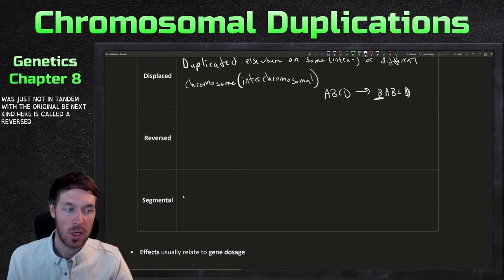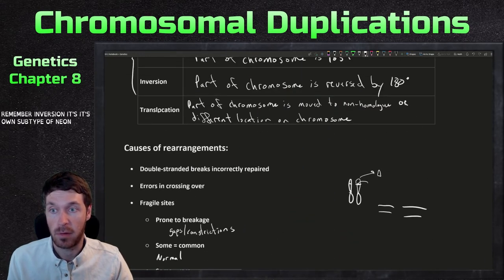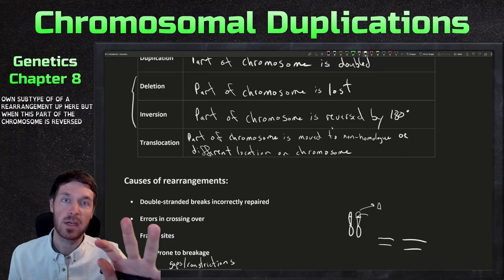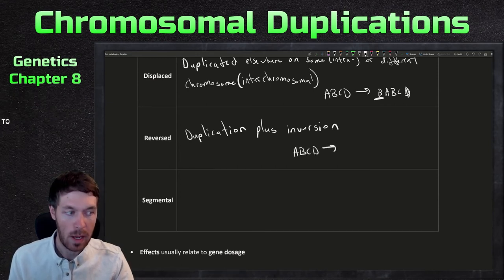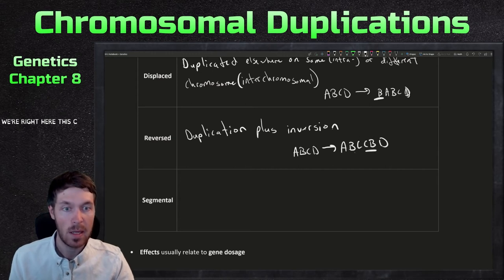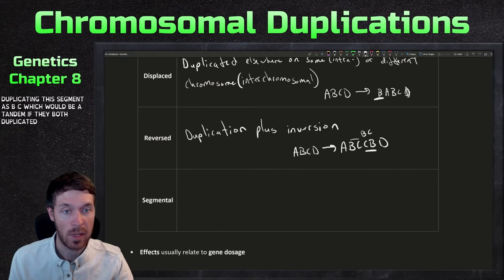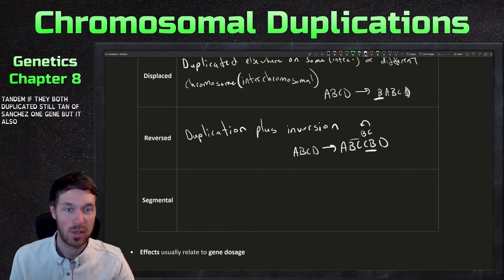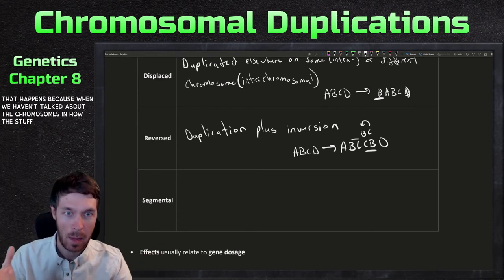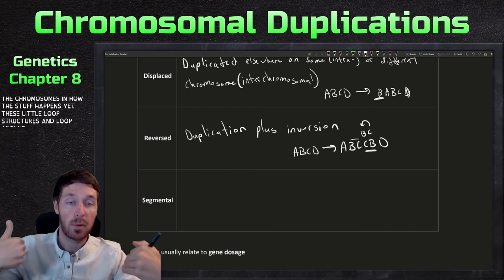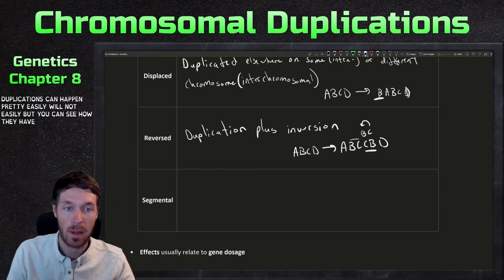Next kind here is called a reversed duplication. It's a duplication plus an inversion. Remember, an inversion is its own subtype of a rearrangement. But when this part of the chromosome is reversed 180 degrees, it doesn't duplicate that region. So this one duplicates it. So it's when you go something from like A, B, C, D to A, B, C, C, B, D, where right here, this C, B was duplicated. Instead of duplicating this segment as B, C, which would be a tandem, it also switched. So then we have C, B instead of B, C. And that happens because chromosomes can form these little loop structures and loop around and flip around. So these inversions and duplications can happen pretty easily. Well, not easily, but you can see how they happen. It's not magic is what I'm saying.